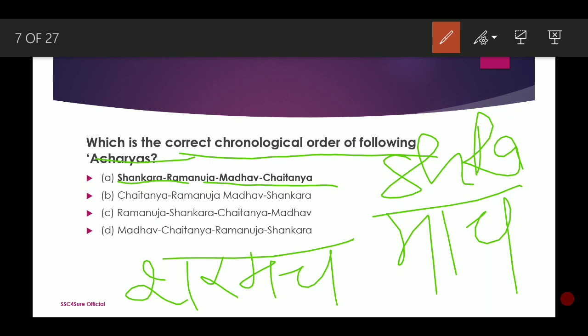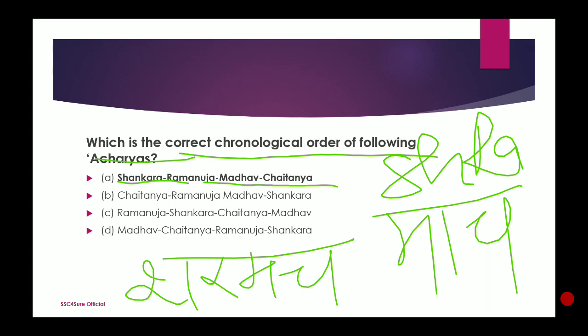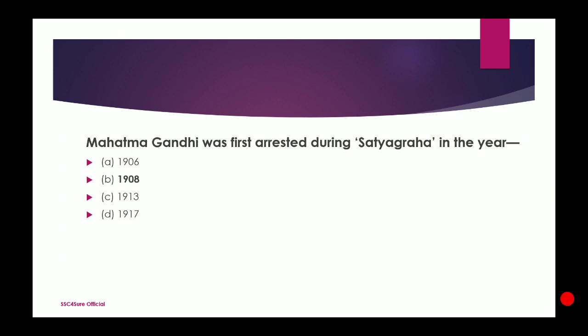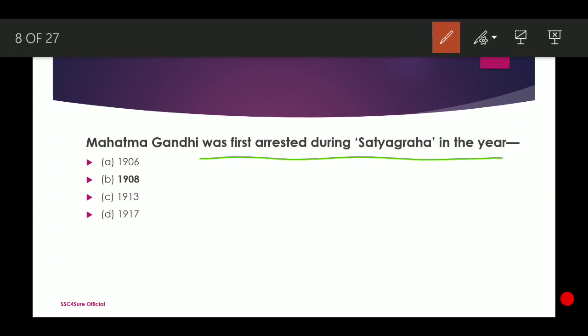I will carry on in English as well because South Indian viewers need to understand also. Next question: In which year was Mahatma Gandhi first arrested during Satyagraha? It was the year 1908 — Mahatma Gandhi was arrested during the Satyagraha movement in 1908.